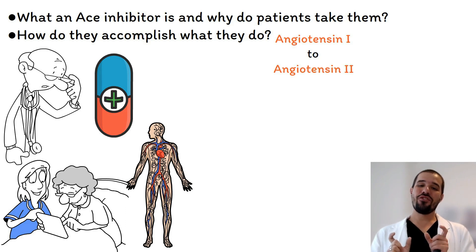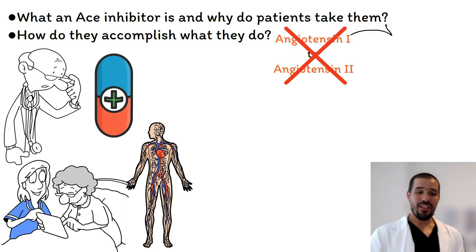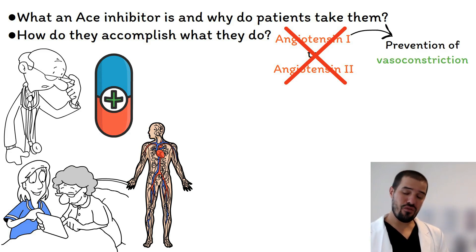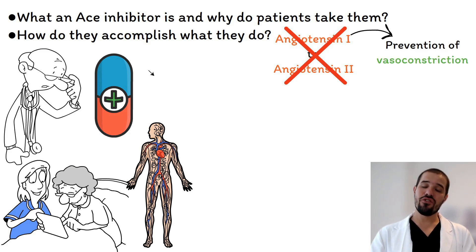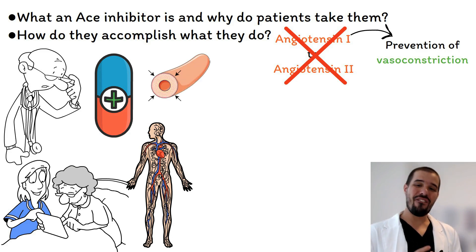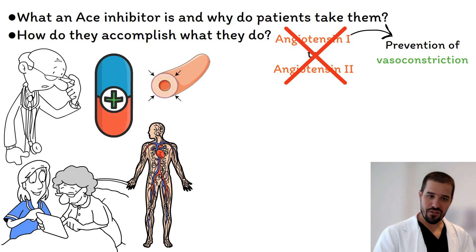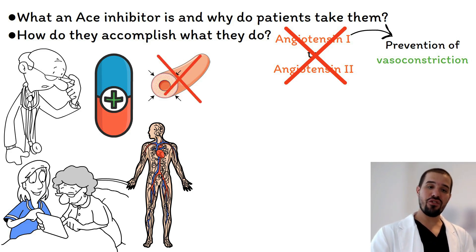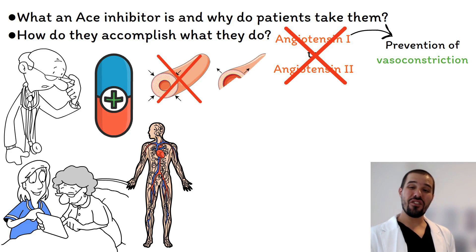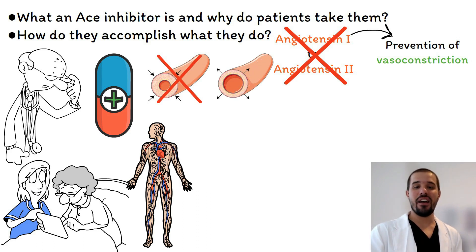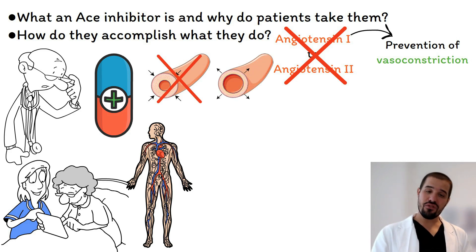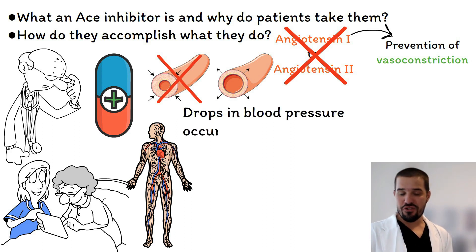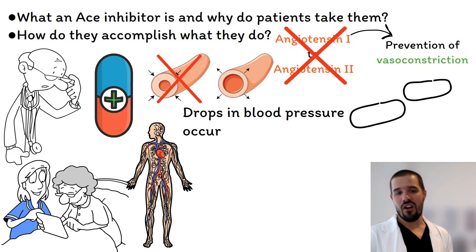ACE inhibitors specifically prevent the conversion of angiotensin I to angiotensin II. This prevention is the prevention of vasoconstriction — when angiotensin I converts to angiotensin II, vasoconstriction occurs in the blood vessels. These medications specifically prevent that vasoconstriction from occurring, thus promoting vasodilation.